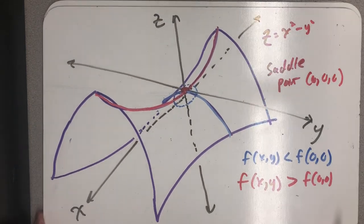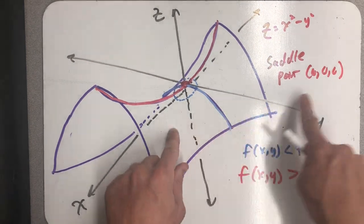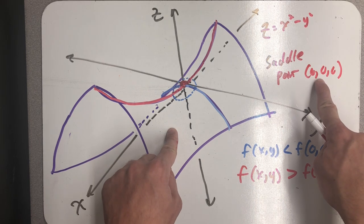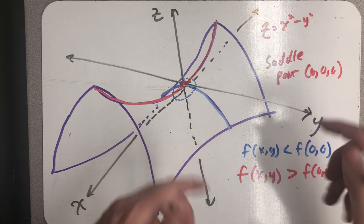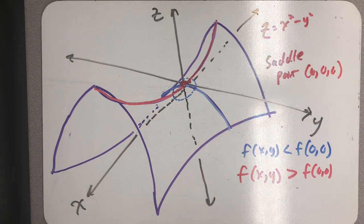So, on my hyperbolic paraboloid, the critical point is (0, 0). And then the saddle point is (0, 0, 0), the ordered triple.